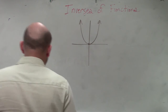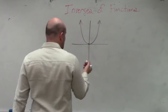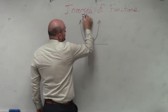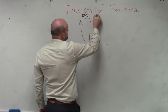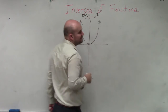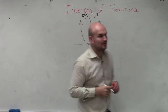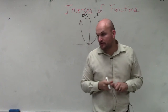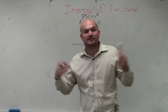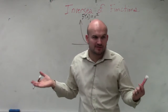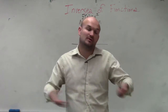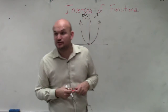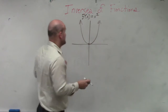So ladies and gentlemen, this is a function — a function we are familiar with. This is f of x equals x squared, correct? And we can know the graph is a function based on one of the things we learned: using the vertical line test.